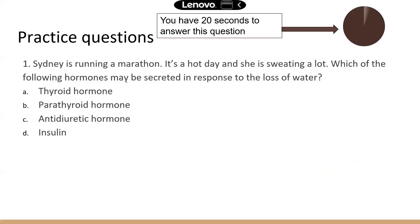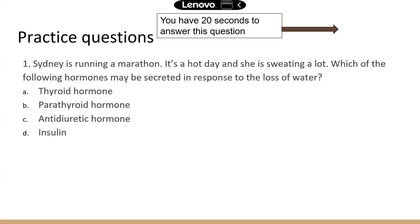Let's look at the first question. Sydney is running a marathon on a very hot day and she is sweating a lot. Which hormone may be secreted in response to the loss of water? Since she is losing water, the body is going to try to retain water. The hormone involved in water balance that promotes retention of water is antidiuretic hormone — ADH. So you don't generate a lot of urine and your body conserves all the water.